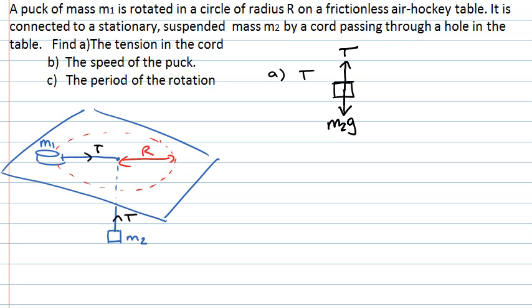We're told that the mass is stationary and suspended. Because it's stationary, we know that the forces on the mass must be balanced due to Newton's first law. So the tension is going to be equal to the weight, so the tension T equals m2 times g. The second part of our problem asks us to find the speed of the puck, so we're looking at